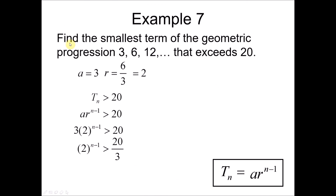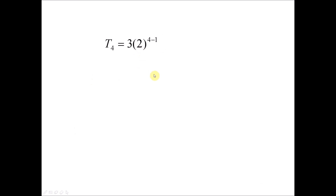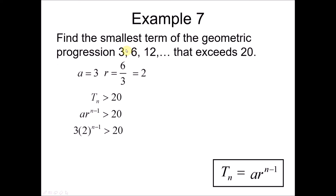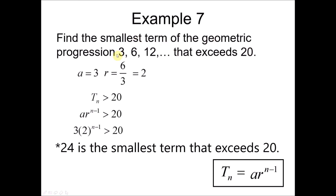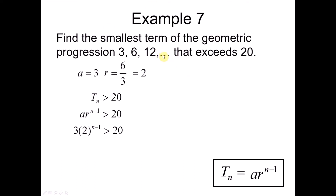After finding n = 4, we find the value of the fourth term: t4 = 3 × 2^(4−1) = 3 × 8 = 24. We can verify: 3, 6, 12, 24 — multiplying by 2 each time. The fourth term, 24, exceeds 20. When numbers are small you can list them, but for large values you need the logarithm method. This method is very useful.